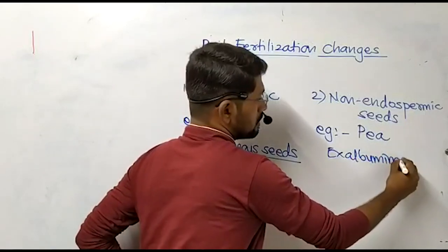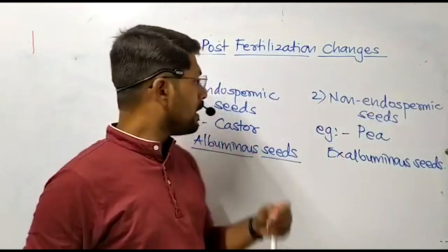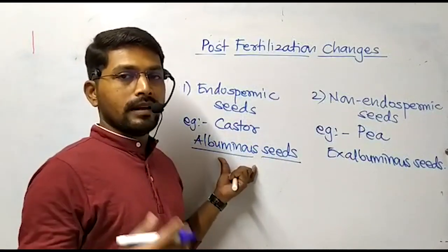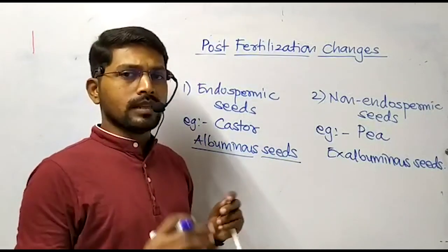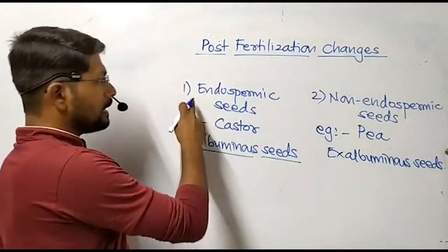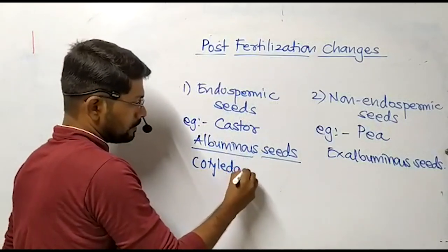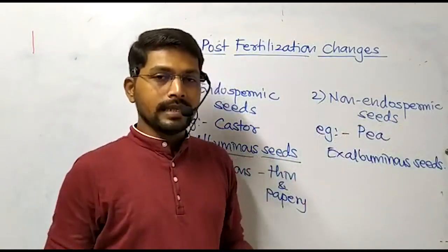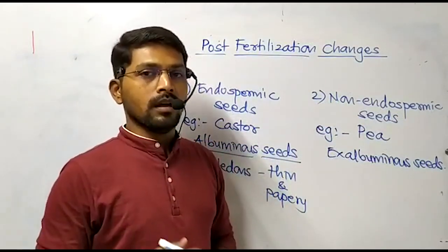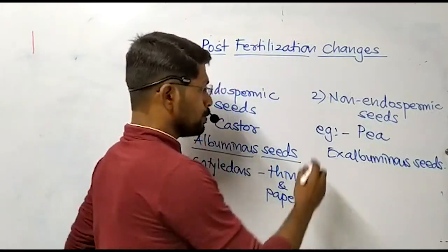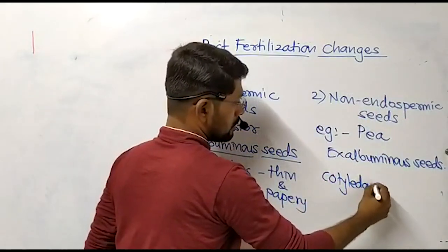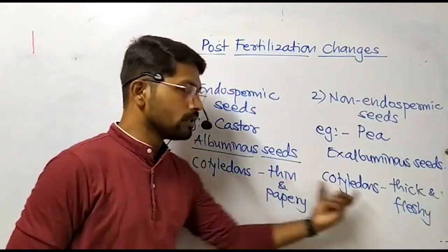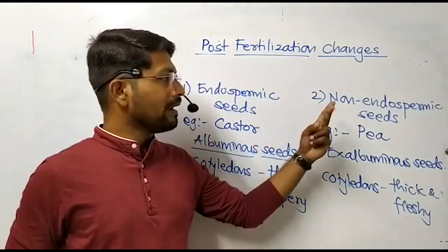In endospermic seeds, endosperm is present at maturity so the cotyledons have no need to store food — they are thin and papery. But in non-endospermic seeds, as endosperm is absent at maturity, food for seedling growth is stored inside the cotyledons, making them thick and fleshy. On the basis of the nature of cotyledons, you can easily identify the type of seed — whether it is endospermic or non-endospermic.